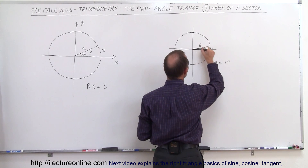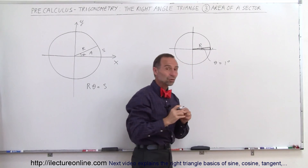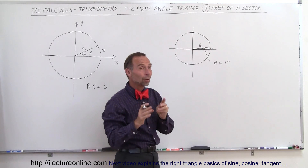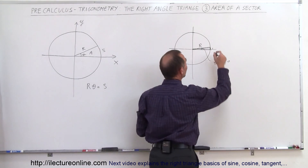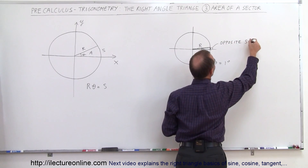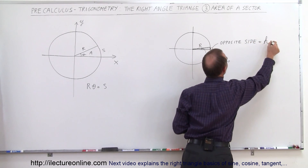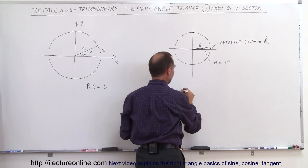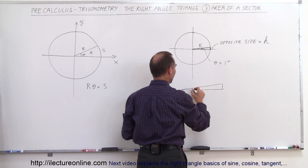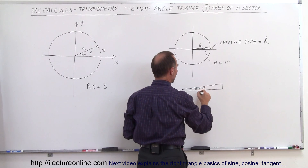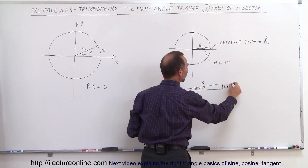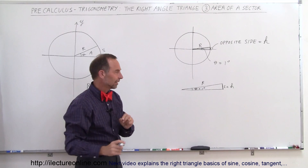If we draw a triangle there, the opposite side of the triangle — the far side — should be almost exactly the same as the arc length. Not quite, but almost exactly the same. So we call this the opposite side, which is equal to the height h of the triangle. We have this very skinny triangle. Let me draw this a bit bigger: the angle is theta, which is one degree, the radius r is the long side, and the arc length s equals the height of the triangle. Not exactly, but close enough.